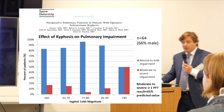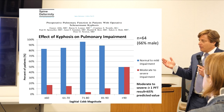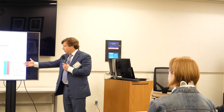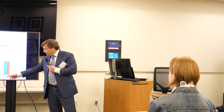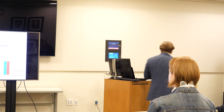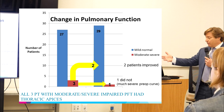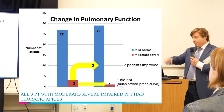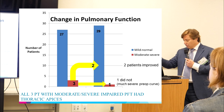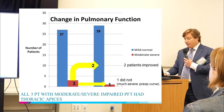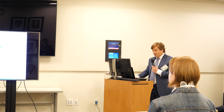Only the most severe curves cause decline in lung function. For curves over 90 degrees, more patients experience decreased lung function. With surgery, the vast majority of those with severe impairment showed improvement on before-and-after lung function testing — one patient did not fully recover, but surgery can improve lung function.